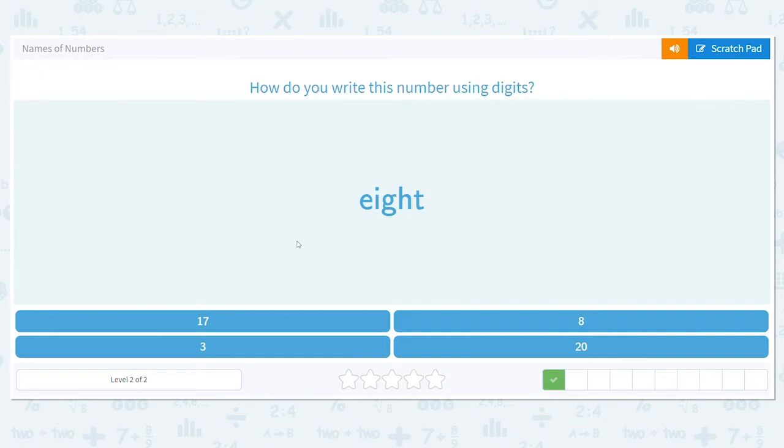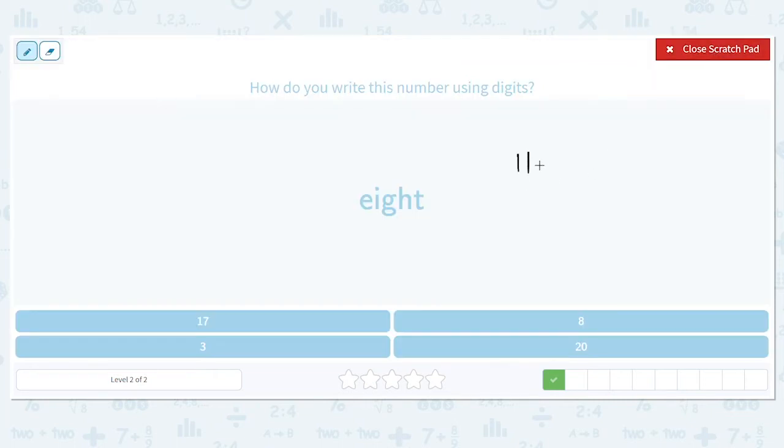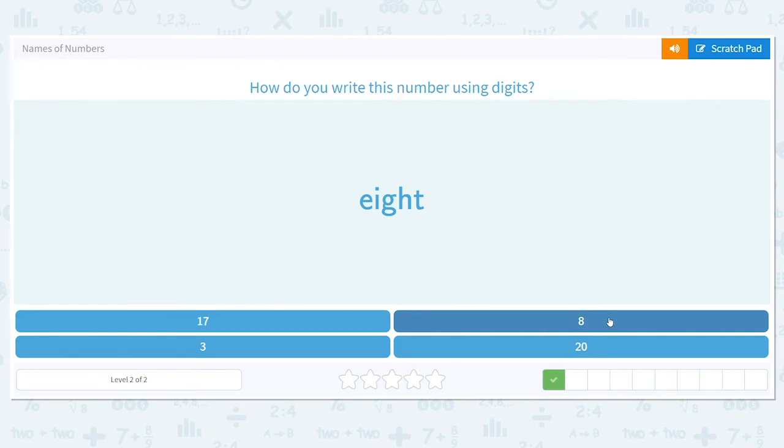Our next number that we have to write using digits is 8. 1, 2, 3, 4, 5, 6, 7, 8. And again I can create a number line if that helps to figure out. We start at 1, 2, what comes next? You know it, 3, then 4, 5. What comes after 5? 6, 7, and then comes 8. Which answer here shows 8? There you have it.